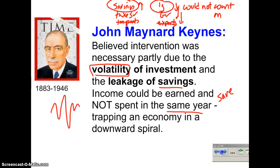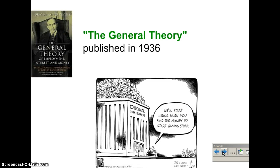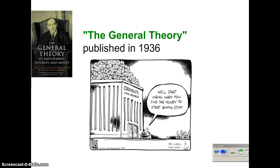He believed that intervention was in fact necessary. In the circular flow, households are cutting consumption, so businesses receive lower revenues and pay less out in incomes, which means households receive less in incomes and pay less out in consumption — down and down, stuck in a downward trap. A cartoon captures this: the businessman says 'we'll start hiring you when you find the money to start buying stuff,' but consumers can't find money to buy stuff if they don't get jobs first.